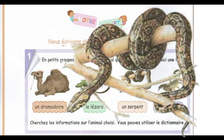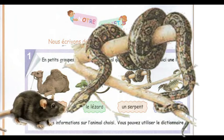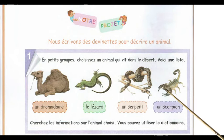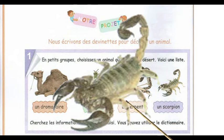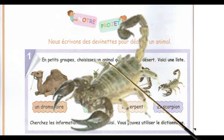Butnissa a choisi le serpent. Le serpent est un reptile. Son corps est recouvert d'écailles. Il est carnivore. Il est venimeux. Youssef a choisi le scorpion. Le scorpion a quatre paires de pattes. Il a une longue queue. Il a deux énormes pinces. Il injecte du venin.